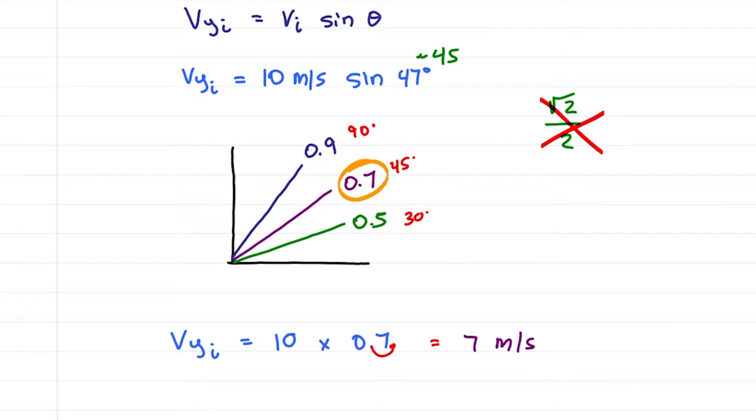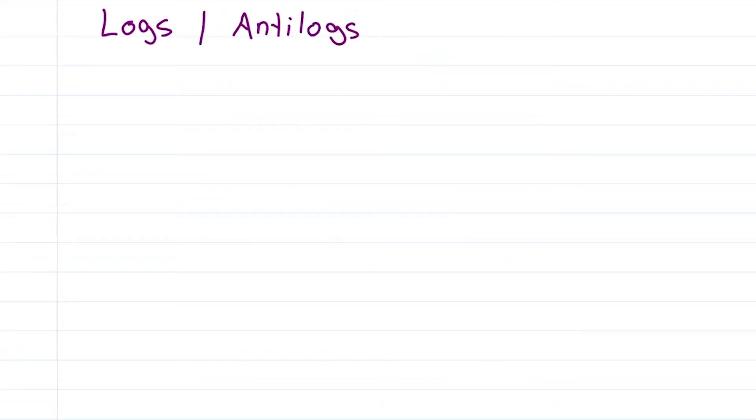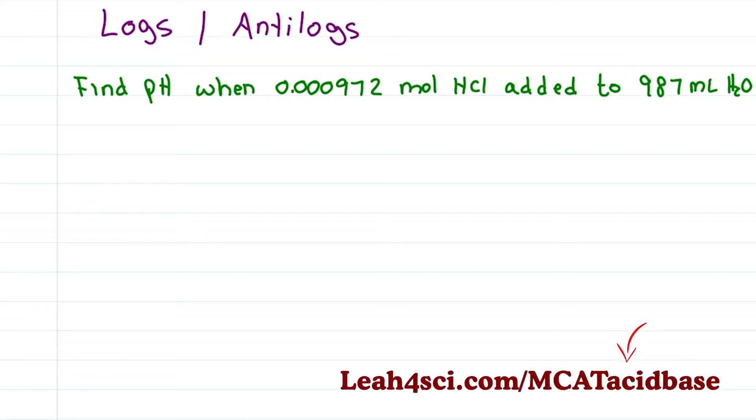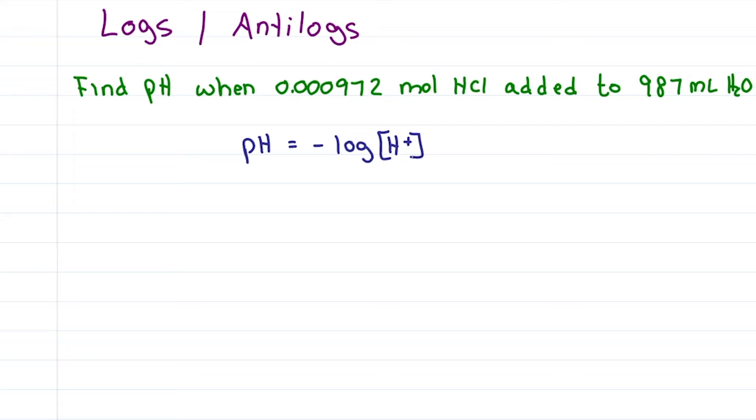And now for everyone's favorite logs and antilogs because the MCAT may ask you to find the pH of a solution when 0.000972 moles of HCl is added to 987 milliliters of water. In my chemistry videos, I teach you that pH is equal to negative log the H plus concentration which means first we need an H plus concentration.